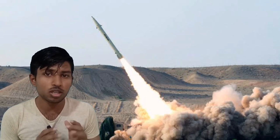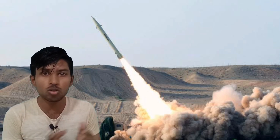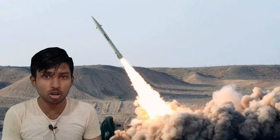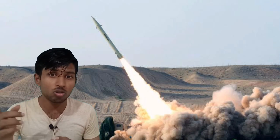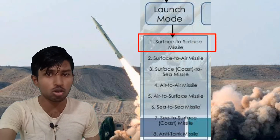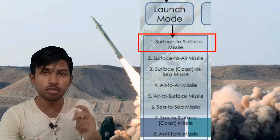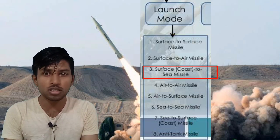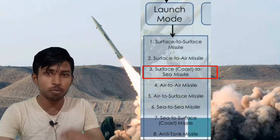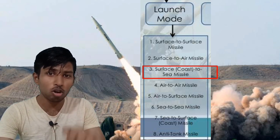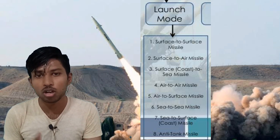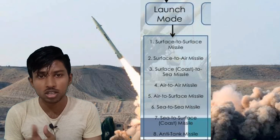The next category is Launch Mode. For example, if you fire a missile from the ground targeting a mission on the ground, that is surface-to-surface. If you fire from the ground targeting a plane, that is surface-to-air. If you target a tank, that is an anti-tank missile. If you fire from a submarine targeting a ship at sea, that is surface-to-sea. You can also have sea-to-air missiles, launched from a submarine or ship targeting airborne targets.